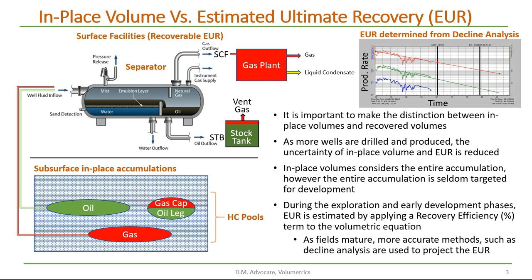Let's consider this diagram on the left. We have some oil pools in the subsurface at some pressure and temperature. As they produce to the surface at a different pressure and temperature, the fluids are separated. Oil is ported to a stock tank and reported in stock tank barrels, and gas is ported to a gas pipeline or a gas plant and reported in standard cubic feet. At the gas plant, the gas can further be separated into gas and liquids.